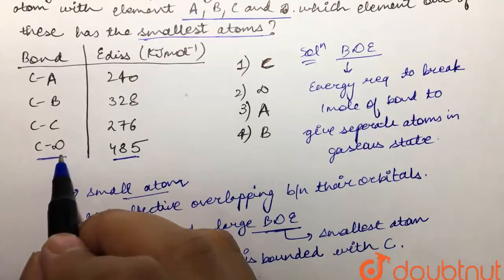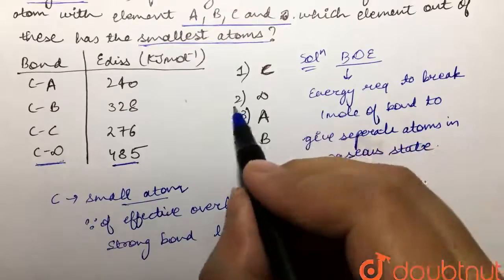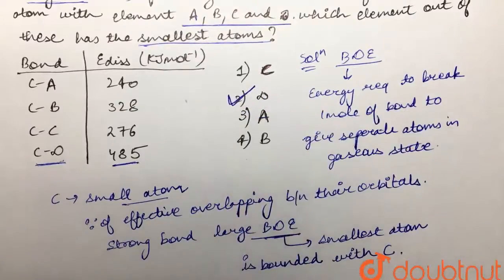have to be small so that there is good overlapping between them and they make a strong bond, and hence their bond dissociation energy would be maximum. So our option is D atom. D atom is given in second option, so our answer would be 2 - that D is the smallest atom in this case.